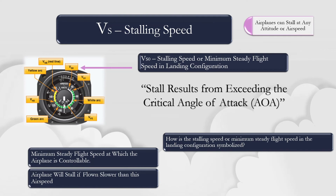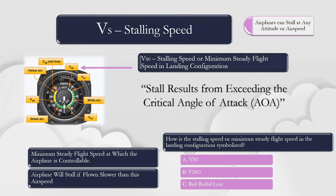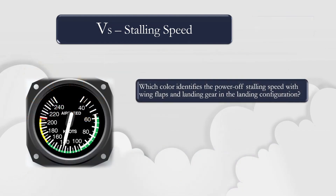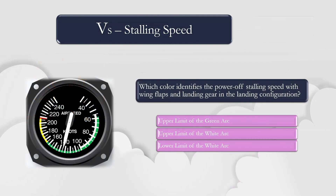To the bottom right of the page is a question that you may see on the private pilot written exam or oral portion of the private pilot checkride: Which color identifies the power-off stalling speed with wing flaps and landing gear in the landing configuration? The lower limit of the white arc represents the power-off stalling speed for an airplane in the landing configuration.